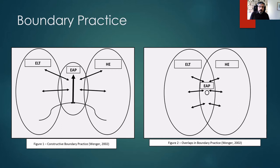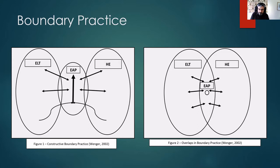Following this boundary practice theory, if it's constructive practice, ELT and HE are interfacing and a new community is being formed which is its own separate identity. We also have the possibility that EAP exists as an overlap between ELT and HE and is not really a new community. I appreciate that different people have opinions on this, and for our purposes it doesn't really matter, but it is something that people might be interested in.